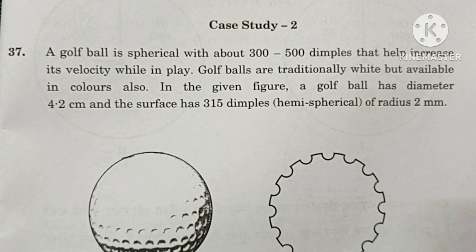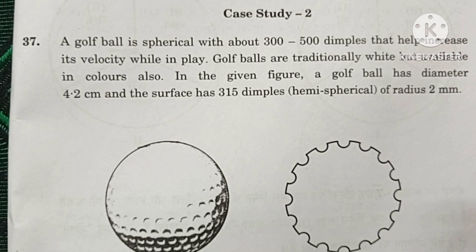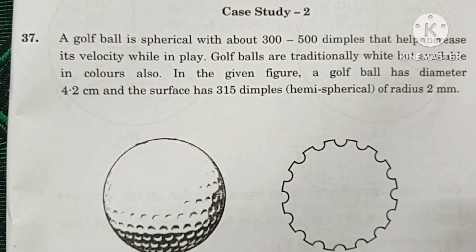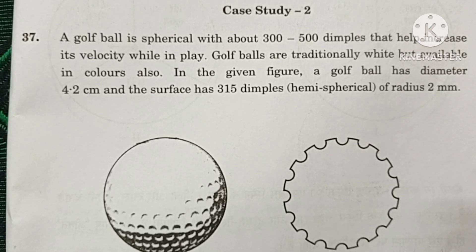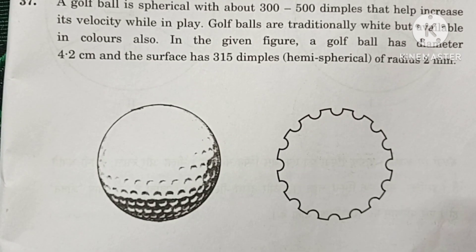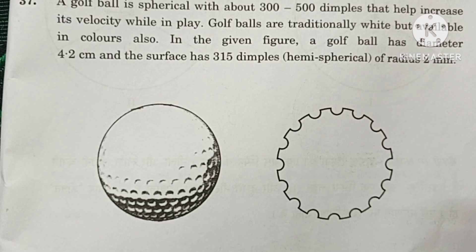Golf balls are traditionally white but available in colors also. In the given figure, a golf ball has a diameter 4.2 cm and the surface has 315 dimples hemispherical of radius 2 mm. You can see the golf ball here and the dimples also you can see here. It is hemispherical in shape.